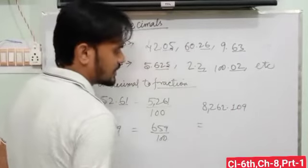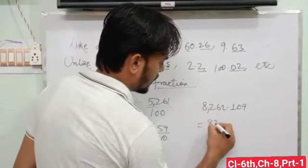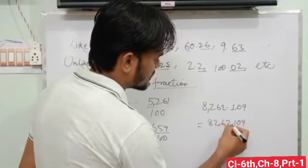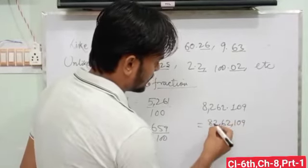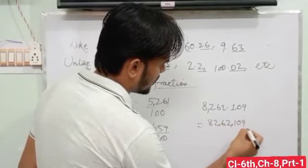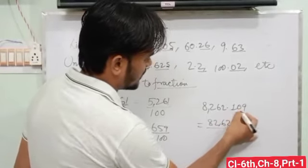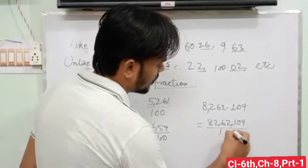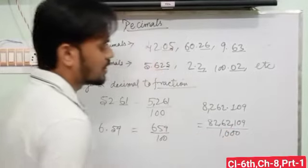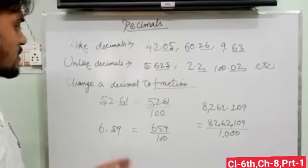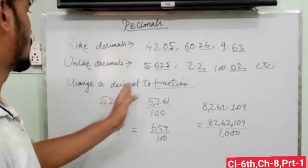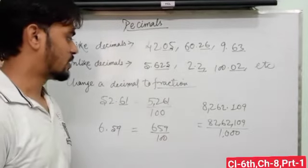When we change to fraction: 8.26209. Write 826209. How many digits are there after the decimal? 1, 2, 3. So followed by 1, put here 3 zeros as the denominator. So similarly, you can convert your decimal to fraction in this way.